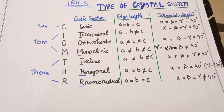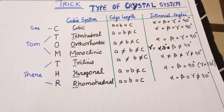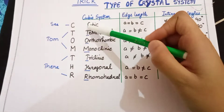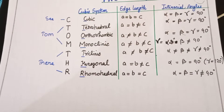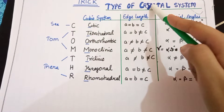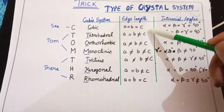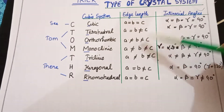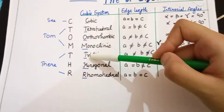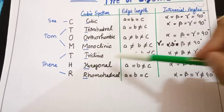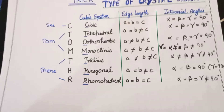Today I'm going to give you the trick to remember it. The trick is: 'See Tom There.' In this, C stands for Cubic, T stands for Tetrahedral, O stands for Orthorhombic, M stands for Monoclinic, T stands for Triclinic, H stands for Hexagonal, and R stands for Rhombohedral.